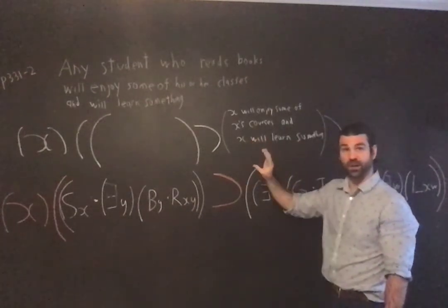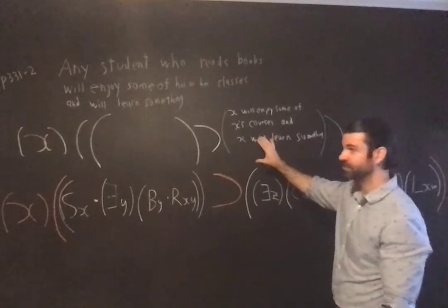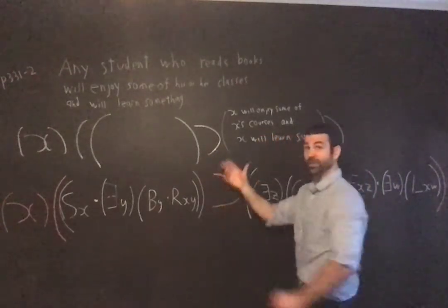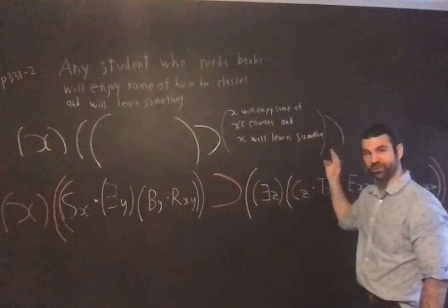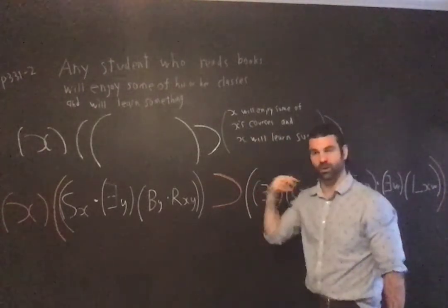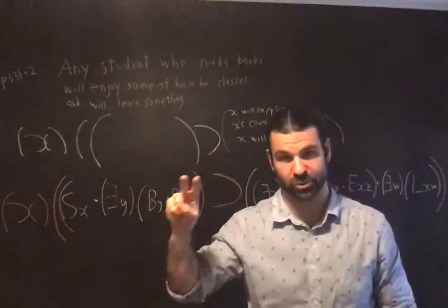I've written in the predicate phrase. Again, crucial that it's appearing as the consequent of the conditional. We laid down the form first. What's the whole point of having the one, two, three step procedure?